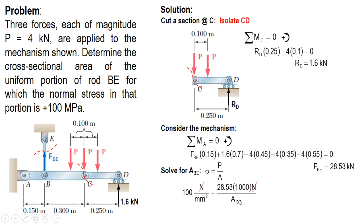Therefore, the unit of the area of BE is millimeters squared. So the area of rod BE is 285.3 millimeters squared.